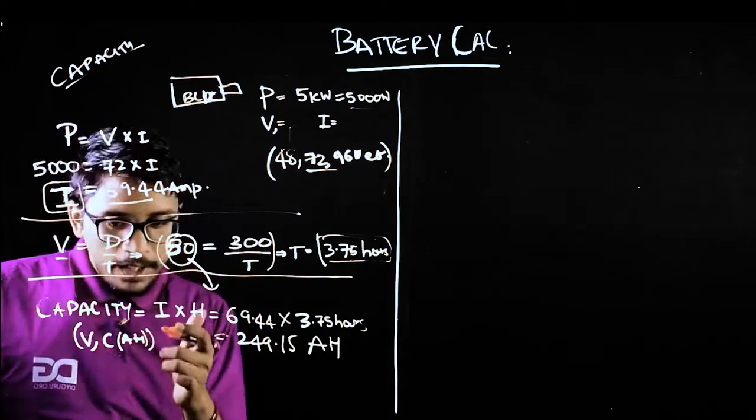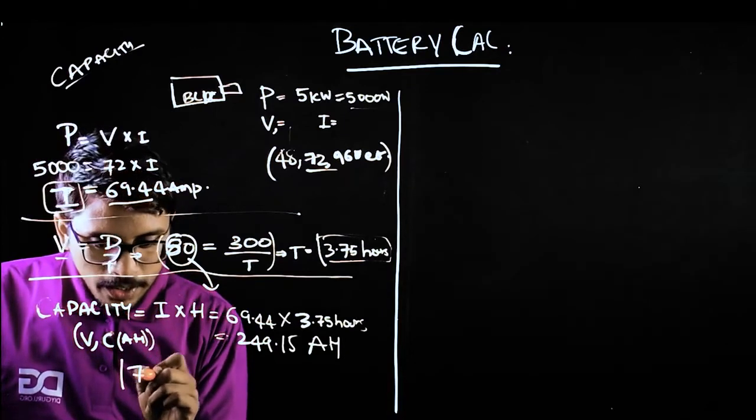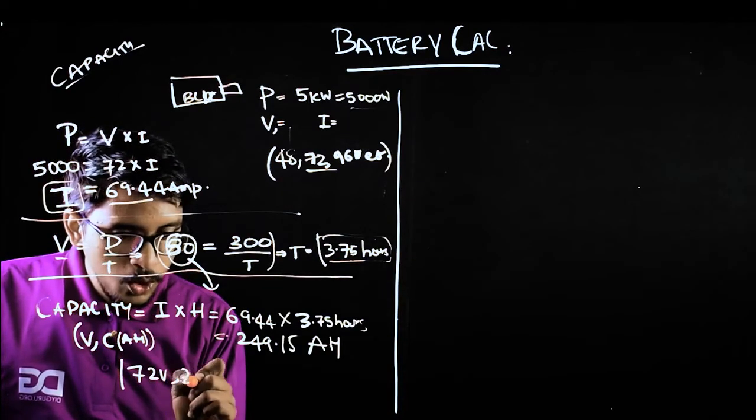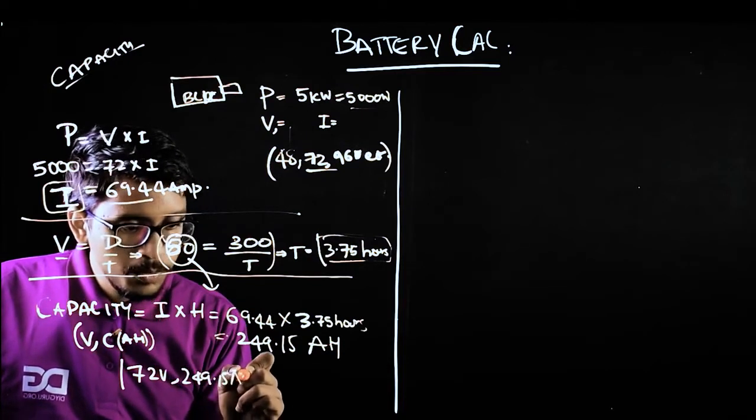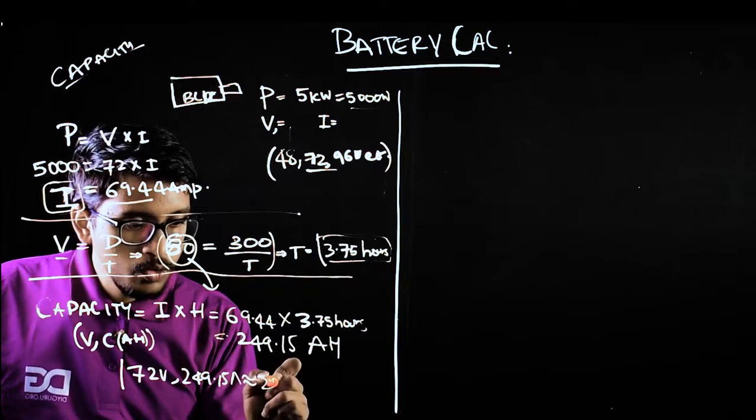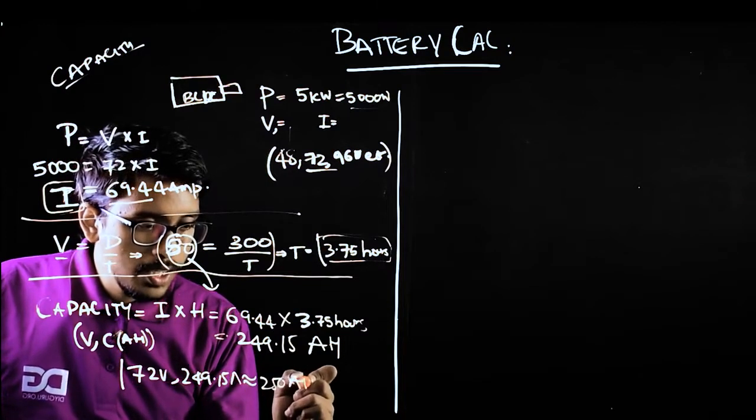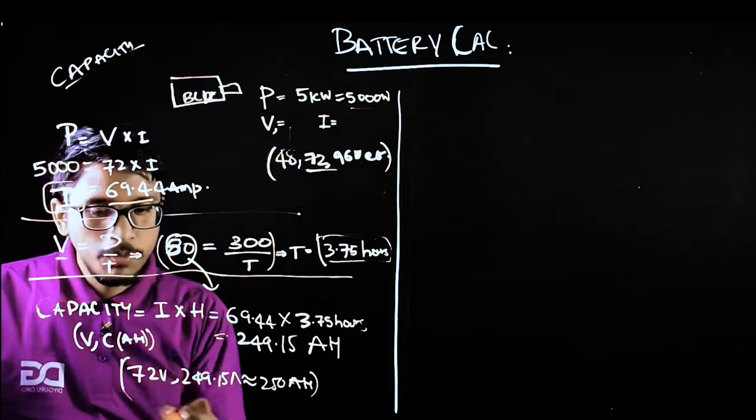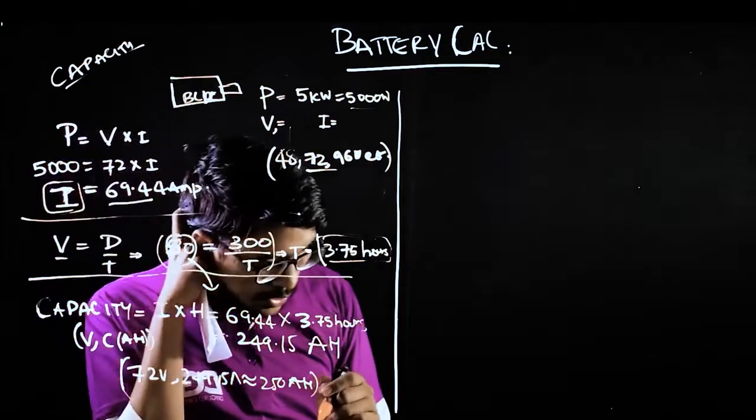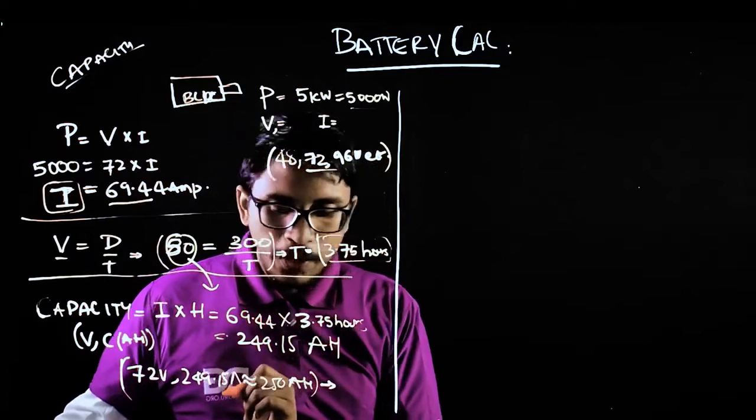We are using 72 volts, 249.15 or approximately 250 ampere-hour battery. You can use it in lead acid or lithium polymer, but there is a small conclusion I need to give.